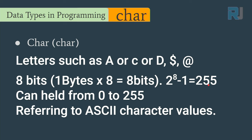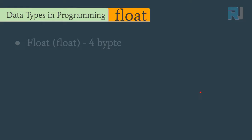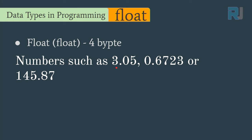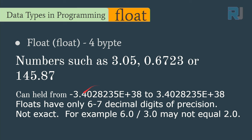The maximum is 255 and not 256 because 0 is also counted. Then we have float, which is used when you want to work with decimal numbers like 3.05, 0.672, or 145.78 — these are floating point numbers. Float can hold values from approximately -3.4028235 × 10^38 to +3.4028235 × 10^38. The 'e' notation means exponent, or times 10 to that power.